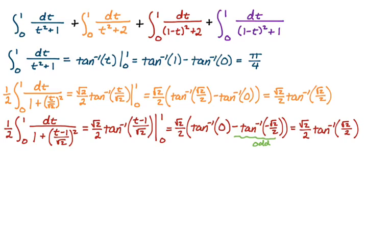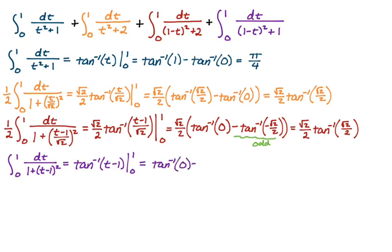For the fourth integral, I note that (1 minus t) squared equals (t minus 1) squared, so the denominator becomes (t minus 1) squared plus 1. With u equals t minus 1, du equals dt, so this is just arctan(t minus 1) from 0 to 1. Plugging in: arctan(0) minus arctan(negative 1). Arctan(0) is 0 and arctan(negative 1) is negative pi over 4, so we get 0 minus negative pi over 4, which is pi over 4.